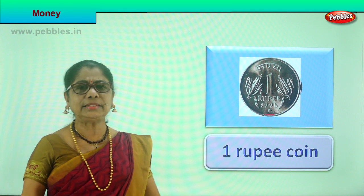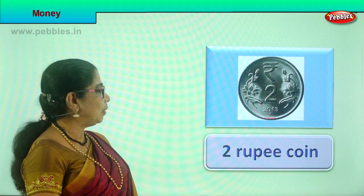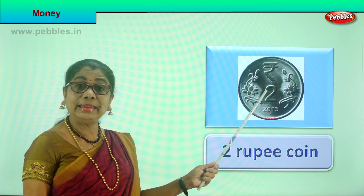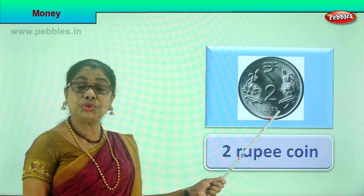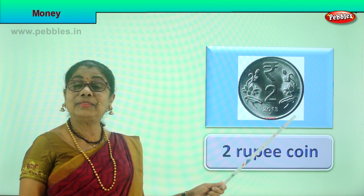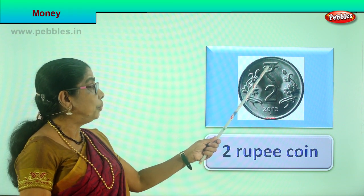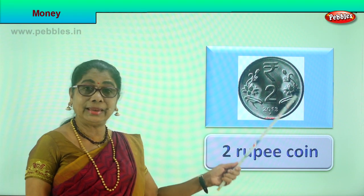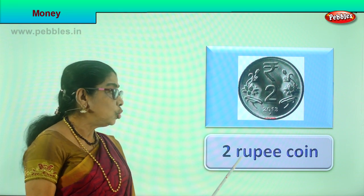What is the next denomination after the one rupee coin? The next coin has the value two written on it — on one side you have the number two and it says 'rupees two'. This is the two rupee coin.